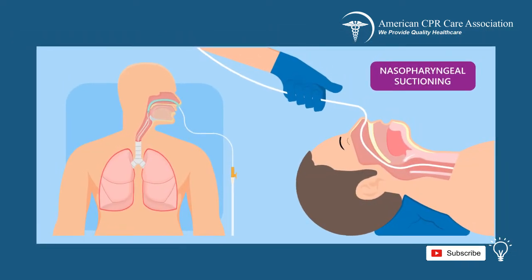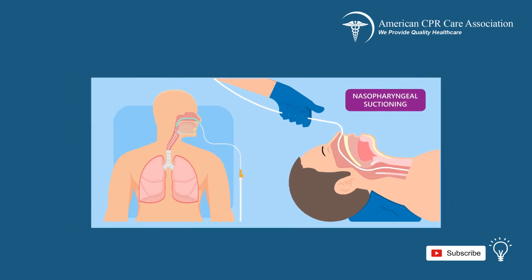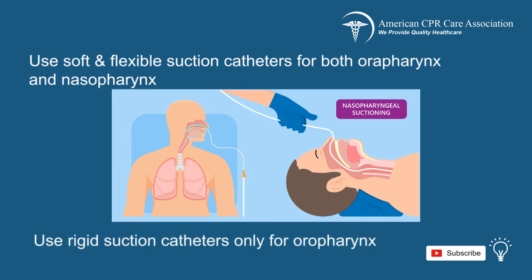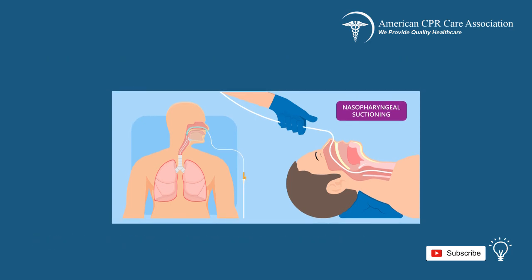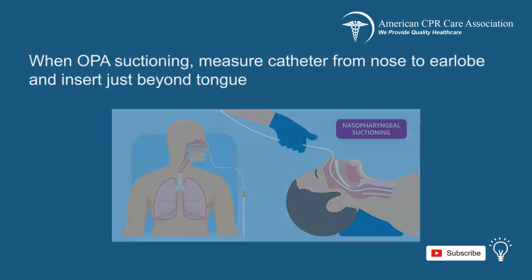Suctioning helps maintain a patient's airway by removing secretions, blood, or vomit. When suctioning, use soft flexible catheters for the oropharynx and nasopharynx, and use rigid catheters only for the oropharynx. When performing oropharyngeal suctioning, remember to measure the catheter from the tip of the nose to the earlobe, and insert the catheter into the oropharynx just beyond the tongue.